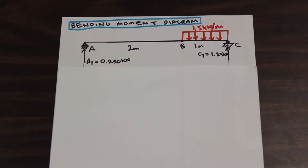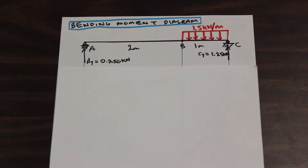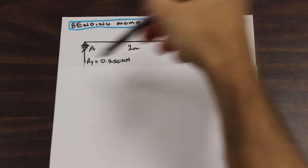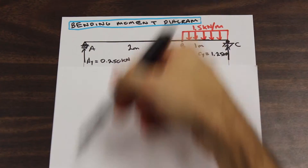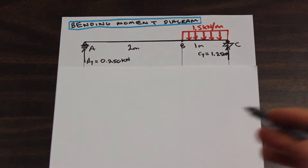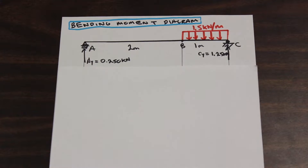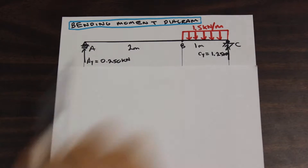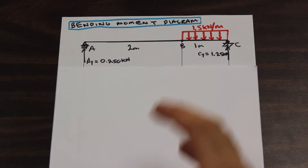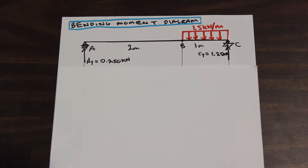Hey guys, we're back. Fred here at Bath and Engineering and we're on the second part of our bending moment diagram question. I just resketched it up here and drew a couple of lines extending down. In the next video I'll show you that and we will actually draw the diagram. But this video, we're going to be deriving the equations for the different sections of the beam.